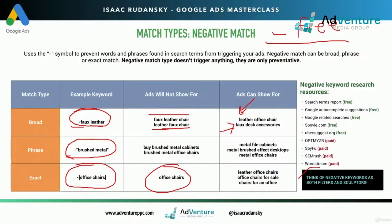Say I'm running an ad group for wheeled office chairs, and I have some broad match keywords. I look at the search terms report and see a lot of searches for just 'office chairs.' That's a search term I still want to pay for, just not from this ad group — I don't want it going to that page, and I may not want to pay as much for that click. This is where traffic sculpting comes in. Think of negative keywords not only as filters but as sculptors. I can add a negative exact match [office chairs] at the ad group level on my wheeled campaign, telling Google that when anyone searches 'office chairs,' it must go to a different ad group with an eligible keyword.